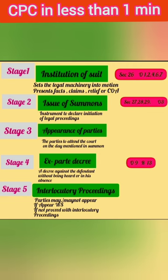Stage 1: Institution of a Suit — Section 26, Order 1, 2, 4, 6, 7. Stage 2: Issue of Summons — Section 27, 20, 29, Order 3.